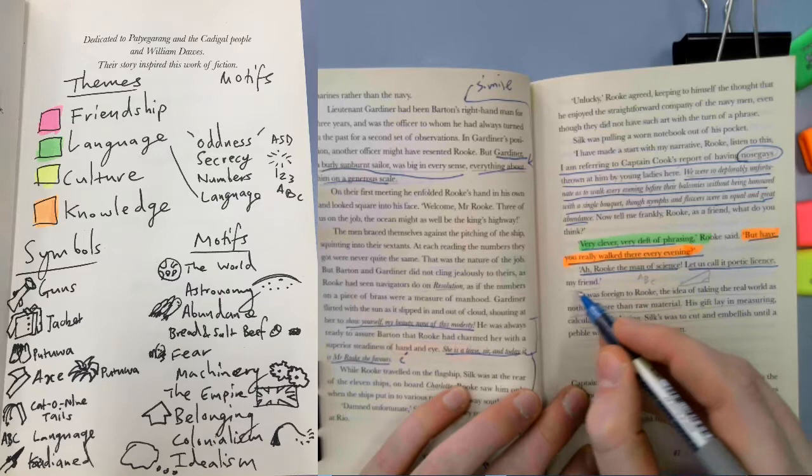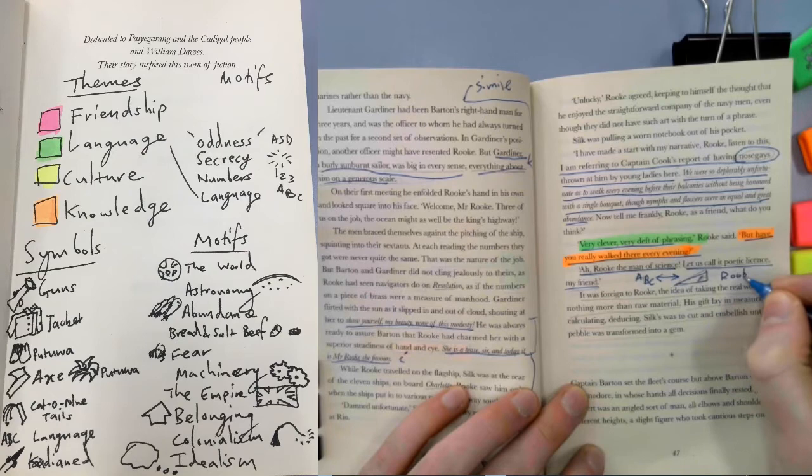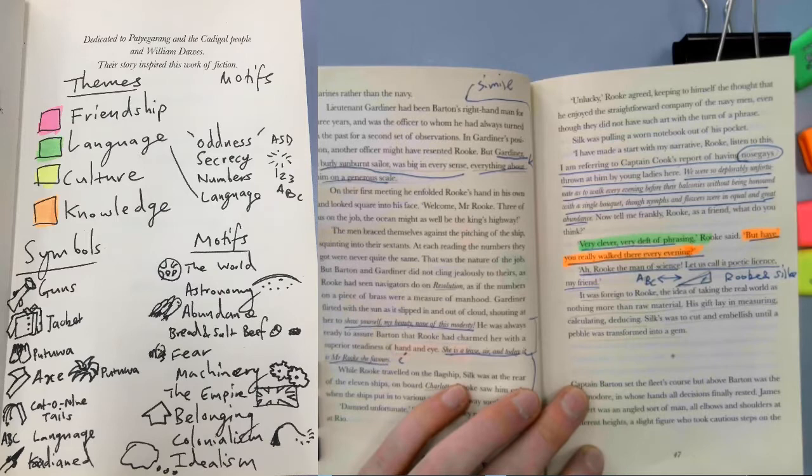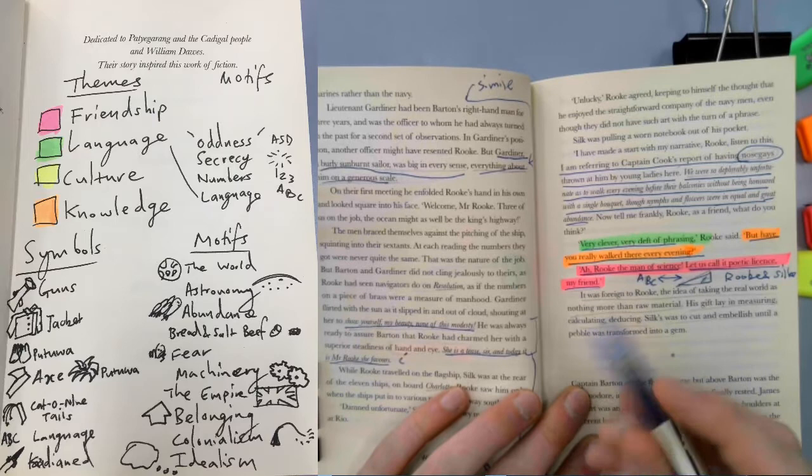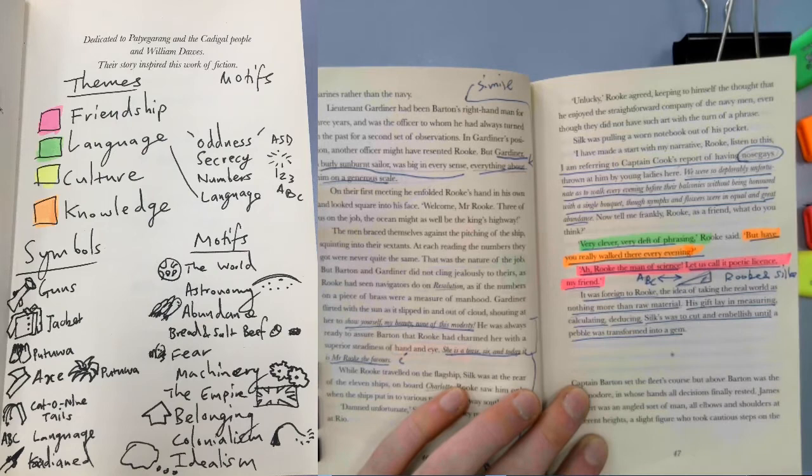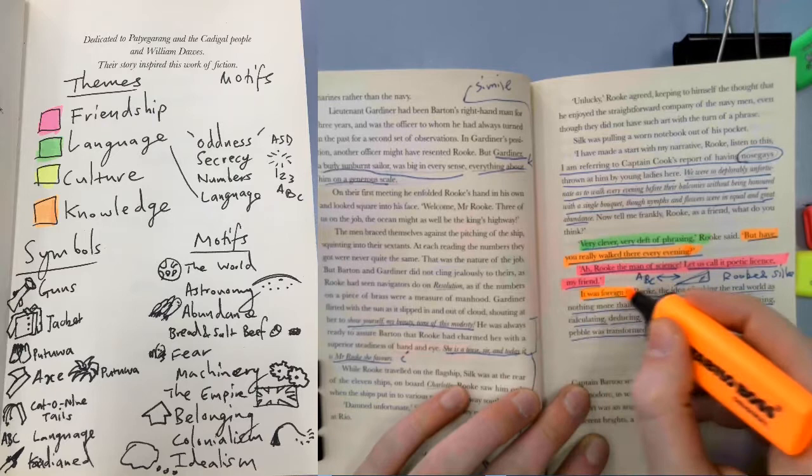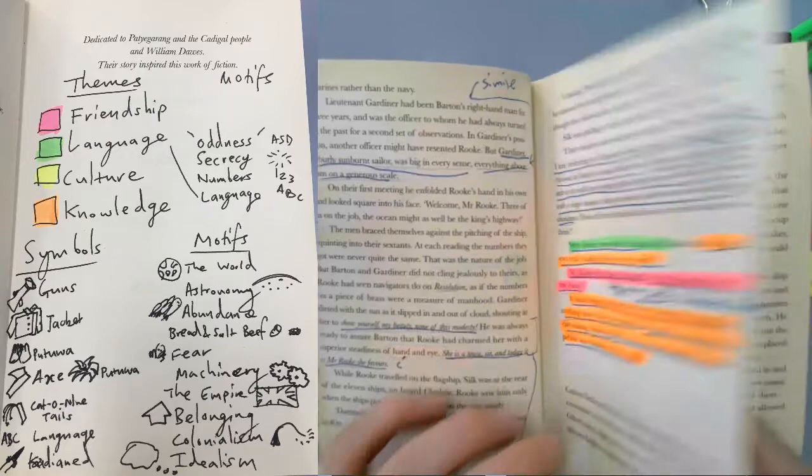Rook snaps back, Rook the man of science. Let's call it poetic license, my friend. So you've got an obvious comparison between Rook and Silk. So this could be really useful to highlight friendship, but it would be really useful to use as kind of an exploration of the foil nature of the two characters and how they work together against one another. It was foreign to Rook the idea of taking the real world as nothing more than raw material. His gift lay in measuring, calculating, deducing. Silk was to cut and embellish until a pebble was transformed into a gem. So again, that's his knowledge of the world, his view of the world, his world view.